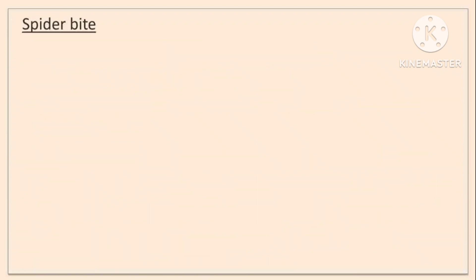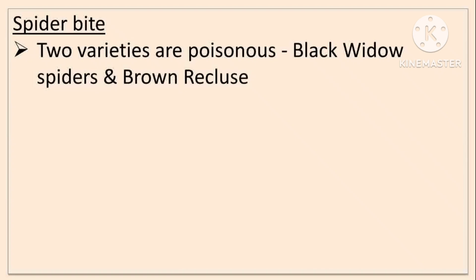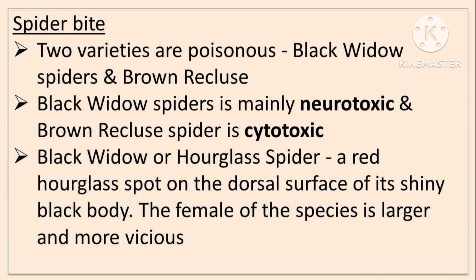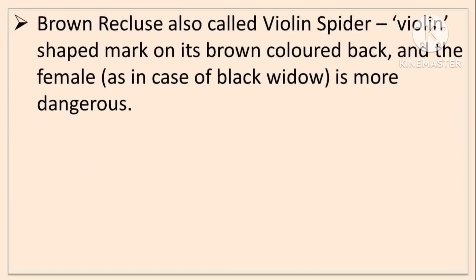Spider bite has two main poisonous varieties: black widow spider and brown recluse. Black widow spiders are mainly neurotoxic and are also called hourglass spiders because of a red hourglass spot on the dorsal surface of their shiny black body. The female is larger and more vicious than the male. Brown recluse, also called violin spider due to a violin-shaped mark on its brown-colored back, is cytotoxic, and again the female is more dangerous than the male.